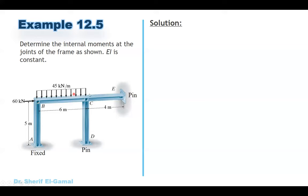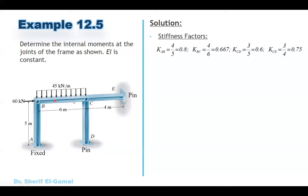As we learned in moment distribution, we start by getting the stiffness factors for each member. For member AB, fixed-fixed and continuous, K = 4EI/L = 4/5 = 0.8. For BC, continuous both sides, K = 4/6 = 0.667. For CD, fixed at C and pin at D, this is a special case: K = 3EI/L = 3/5 = 0.6. For CE, fixed at C and pin at E: K = 3/4 = 0.75.